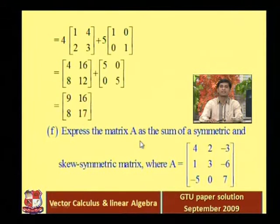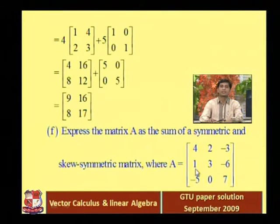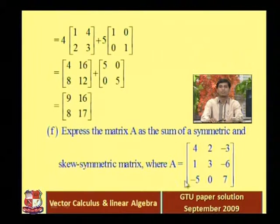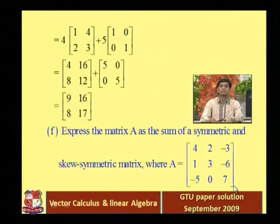Express the matrix A as a sum of symmetric and skew symmetric matrix, where A is equal to 4, 2, minus 3, 1, 3, minus 6, and minus 5, 0, 7.